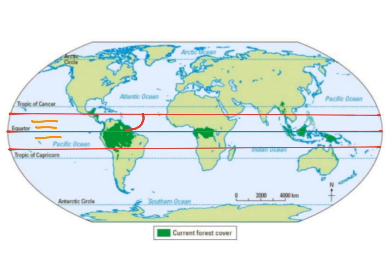The air will continue to rise until it starts to cool because of the altitude, at which point it will start to fall. This will happen both to the north of the equator and to the south of the equator. We call this the Hadley cells. Where we have air rising, or the rising limb of the Hadley cells, we get low pressure, because the air is not pushing on the ground but instead is rising. Where the air of the Hadley cell is falling, or the falling limb, we get high pressure, and this is located at the Tropic of Cancer and the Tropic of Capricorn.